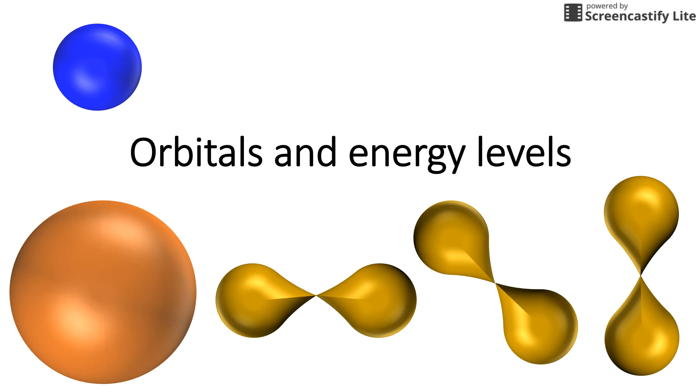If an electron spins clockwise, it'll form a different magnetic pole than if it was spinning in the other direction. That's why you can have up to two electrons in each orbital.